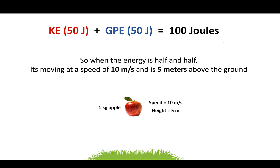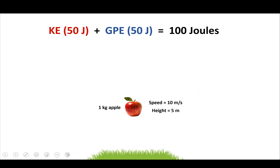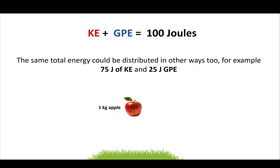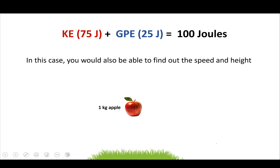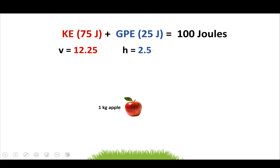But the 100 joules doesn't have to be split 50-50. For example, let's say 75 joules is kinetic and 25 is gravitational — that's allowed, since 75 plus 25 equals 100. In this case, we have a different state of our system. You'd find the speed and height the same way: set kinetic energy equal to 75, gravitational energy equal to 25, and plug through the numbers to find a speed of 12.25 meters per second and a height of 2.5 meters.